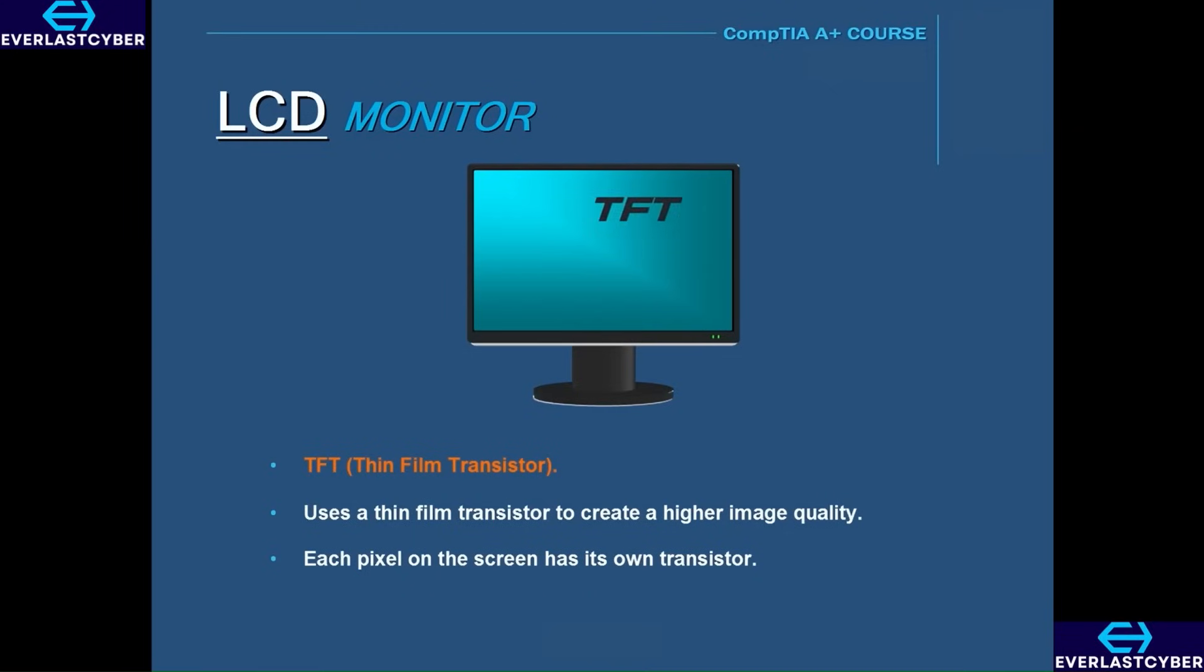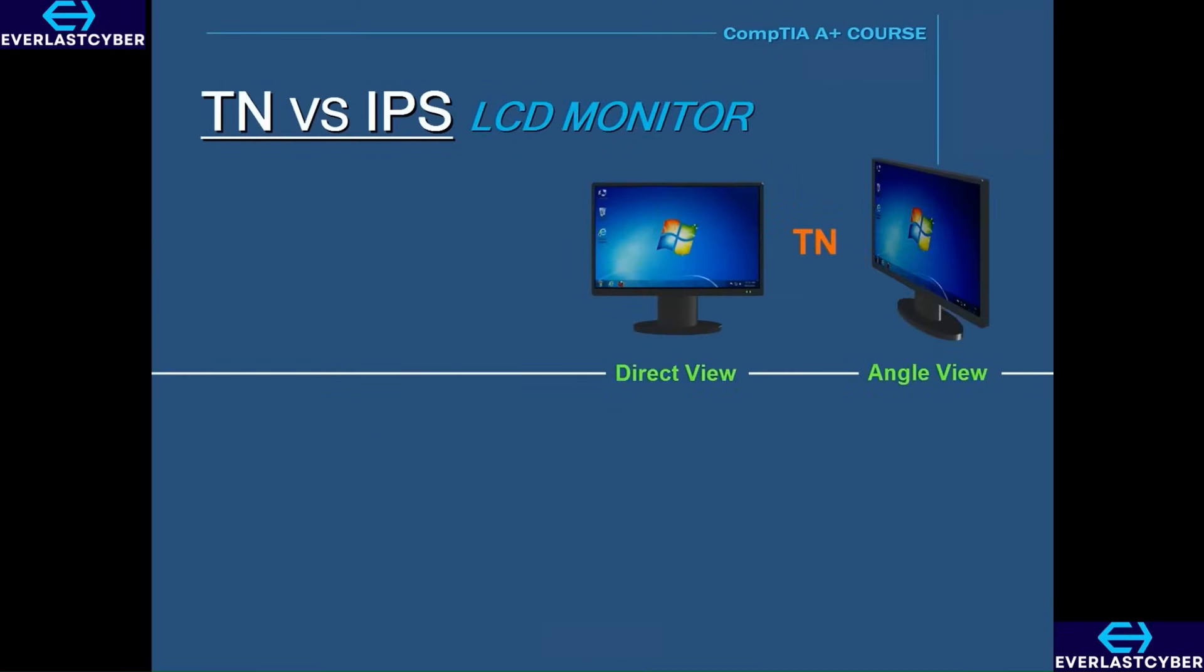There are two different types of LCD monitors that you're going to need to know. One of them is called TN which stands for twisted nematic. This type of LCD monitor works by liquid crystals actually twisting the light as it comes through. TN is an older and cheaper technology that's been around for several decades. The viewing angles and the color reproduction on a TN monitor are not as good as a more modern LCD monitor.